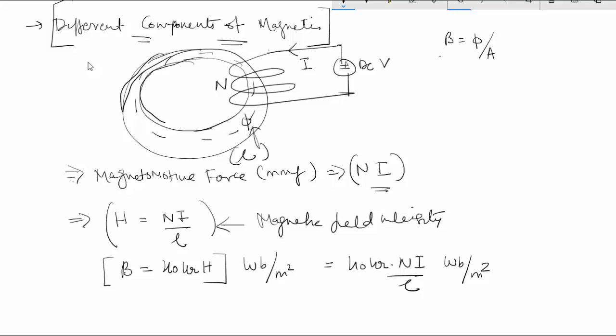So φ is equal to B times A, which is equal to NI divided by L times μ₀μᵣ times A.